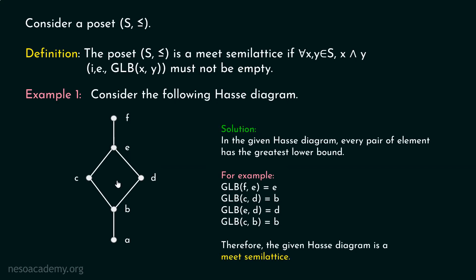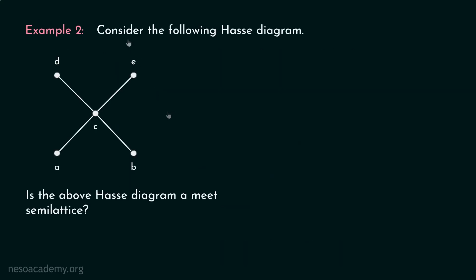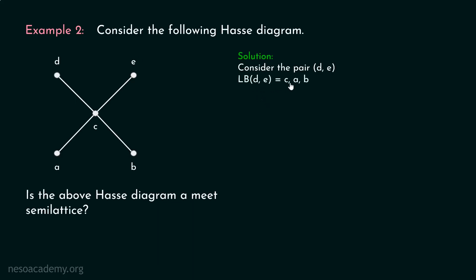Let's consider one more example to cement this concept. Consider the following Hasse diagram. It has been asked: is the above Hasse diagram a Meet Semilattice? Let's identify. Consider the pair d and e. We have to find the lower bounds and the greatest lower bound. Lower bounds of d and e are c, a, and b.